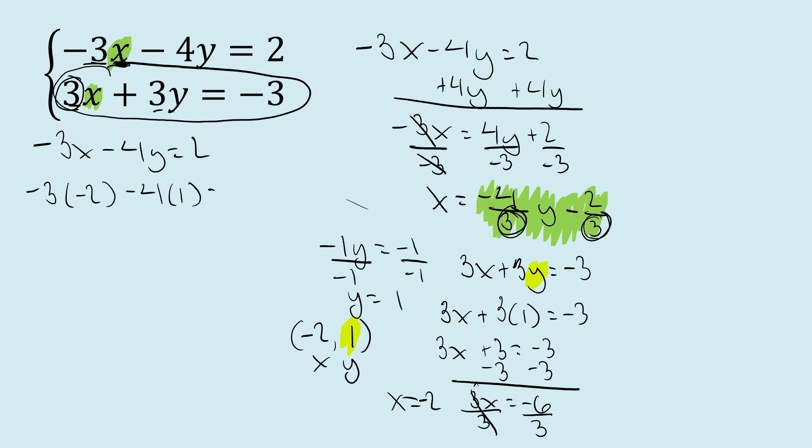Now I've got one more step that I'd like to do. I get 6 minus 4 equals 2, and I get 2 equals 2. So my answer checks. And then in the bottom equation, I get 3x plus 3y equals negative 3. 3 times negative 2 plus 3 times 1 equals negative 3. I get negative 6 plus 3 equals negative 3, and negative 3 equals negative 3. So my answer of negative 2, 1 checked in both equations.